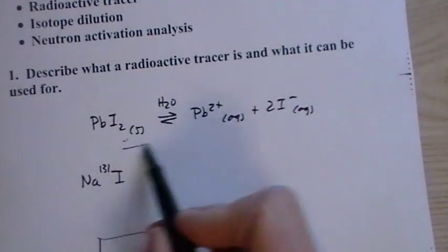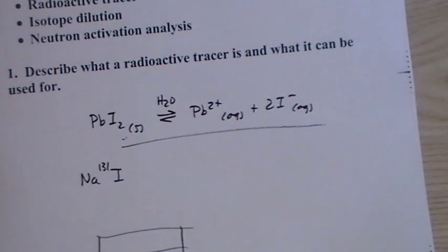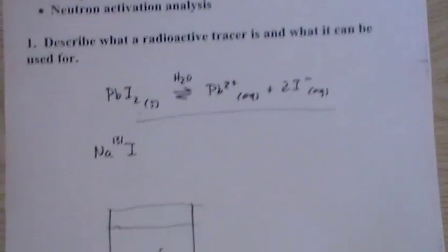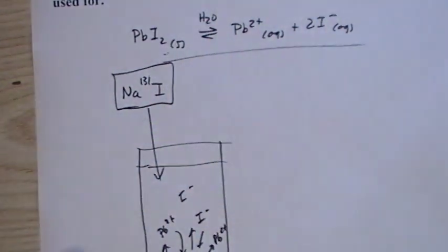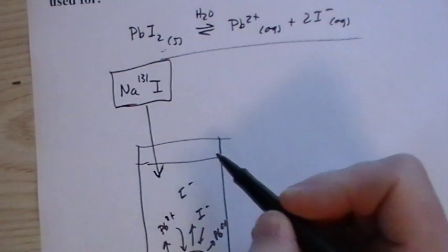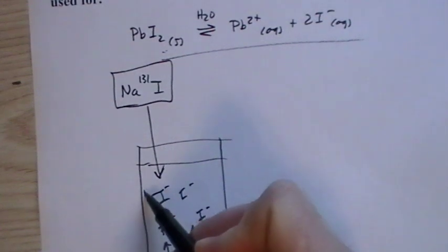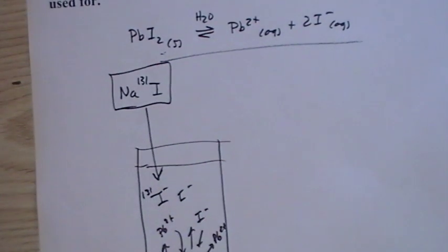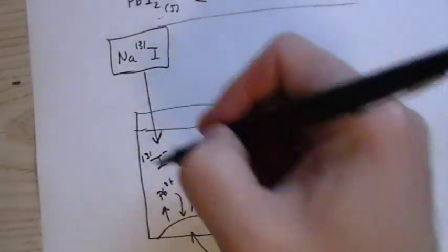Well, that's an assumption that's very hard to prove with something that is very, very slightly soluble. So what we do is we put sodium iodide-131 into the solution. Very reactive. It's used for medical purposes too, medical tracers, radioactive tracers that go into the body.